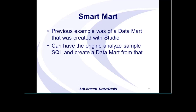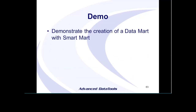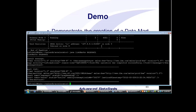This is a great way of having a first stab at creating an accelerated data mart. These are the basic steps: you capture your SQL first — you need some sample SQL. You turn on tracing, run the SQL with tracing on, and then you use two functions: probe_to_mark to analyze the probing data you've just created, and gen_mark_def to turn that definition into XML format, which you can then go ahead and create a data mart from and load.